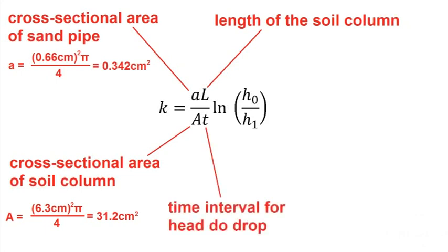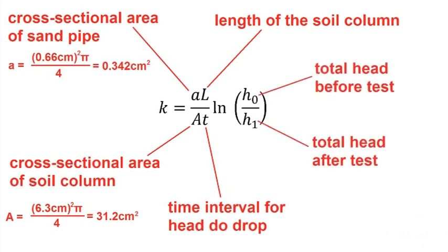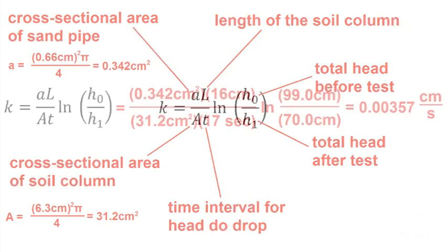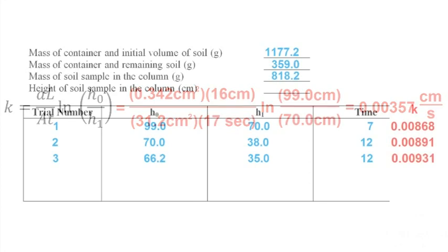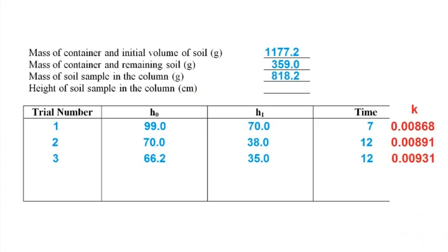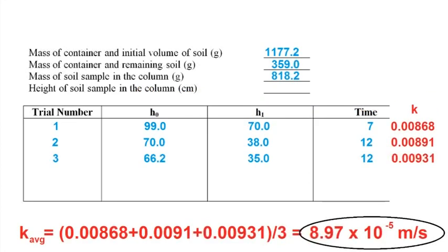T is the length of time taken for the head to drop. H0 and H1 are the total head before and after each test, respectively. Calculate K for each test. Finding the average value of K between all three of our tests gives us the hydraulic conductivity.